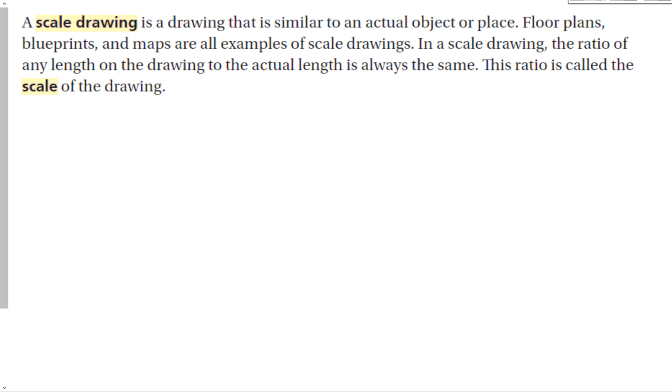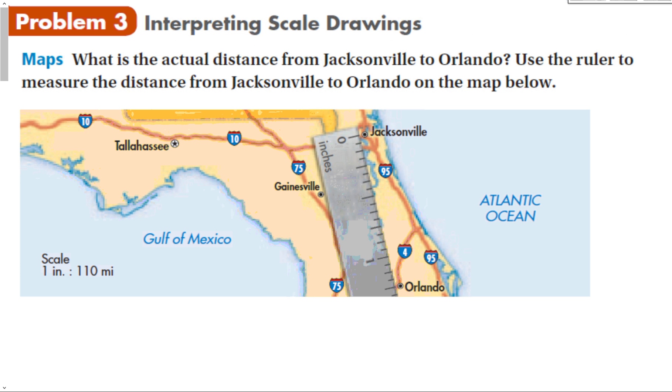Next, we can talk about scale drawings. A scale drawing is a drawing that is similar to an actual object or place, like a house floor or building floor plan. Blueprints and maps are all examples of scale drawings. In a scale drawing, the ratio of any length on the drawing to the actual length is always the same. This ratio is called the scale. If you ever see on a map or a problem that says not to scale, then this doesn't actually work. But usually, most maps, especially real ones, are going to use some sort of scale.